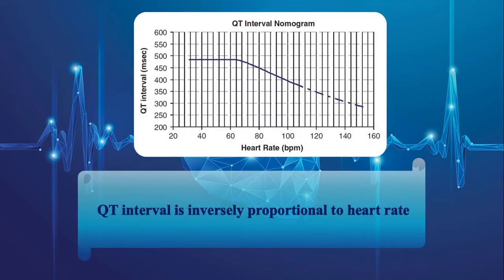QT interval is inversely proportional to heart rate, which means that as heart rate increases, QT interval becomes shorter. On the other hand, as heart rate comes down, QT interval goes up. So it is essential to correct our initial calculation based on the heart rate.